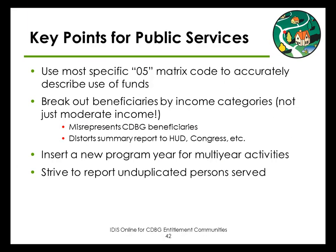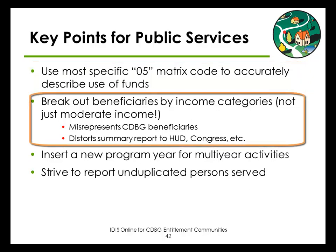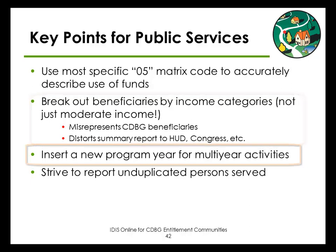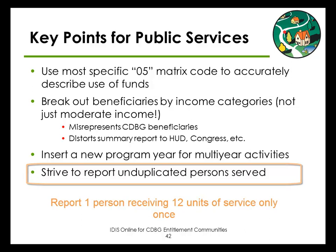Here are some key points to keep in mind when entering data for a public service activity in IDIS. First, use the most specific matrix code — only use the generic O5 as a last resort. When reporting on beneficiaries, do not report everyone as moderate income, as this misrepresents the actual impact of the CDBG program in reports submitted to Congress and other government bodies. If a service is carried out for more than one program year, make sure to report beneficiaries in the correct program year by inserting a new program year on the CDBG accomplishment detail screen. When reporting beneficiaries, try to report unduplicated persons served — for example, if you provide counseling to a homeless person once a month for 12 months, you would report that person once instead of 12 times.